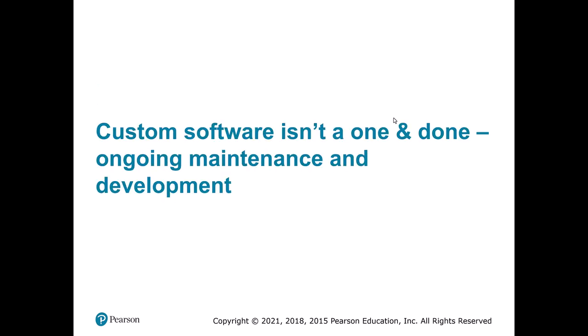Custom software isn't a one-and-done process. There's a lot of ongoing maintenance and development, and actually the operations and maintenance phase tends to be where the bulk of costs occur. Projects are expensive — you might spend a couple million dollars on a new system — but then you'll use that system for 20 or 30 years, maybe even longer. The yearly maintenance ends up being a substantial portion, and often the majority, of the cost for most systems.